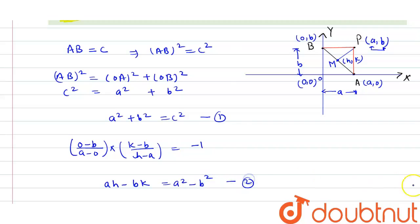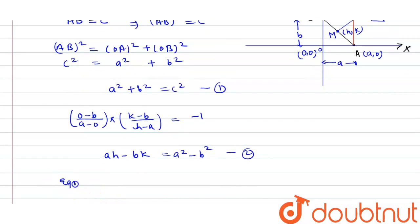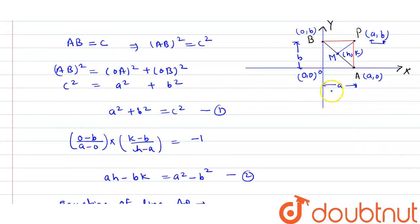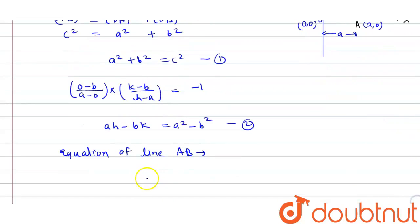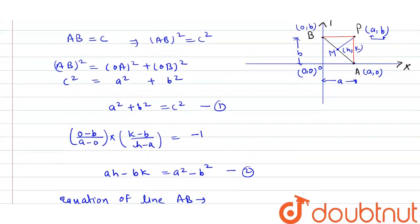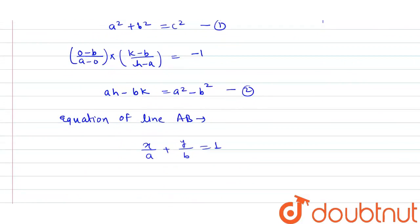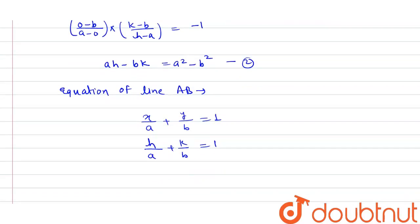Now write the equation of line AB in intercept form. The x-intercept of line AB is a and the y-intercept is b, so its equation is X/a + Y/b = 1. Since point M lies on line AB, its coordinates H and K must satisfy this equation: H/a + K/b = 1. From here we get BH + AK − AB = 0. This is equation 3.